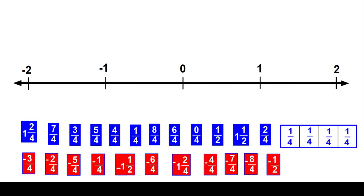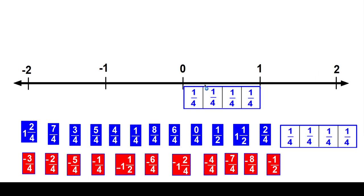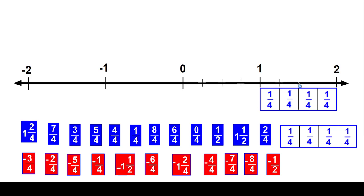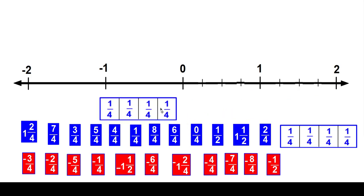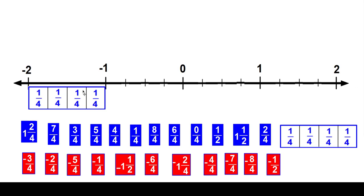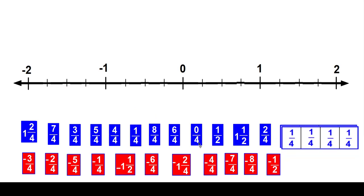We're going to do it one last time. I'm going to go ahead and divide the line up into fourths. This little rectangle divided into fourths is going to help me. Then I'm going to put these numbers on the number line. Here's zero fourths.